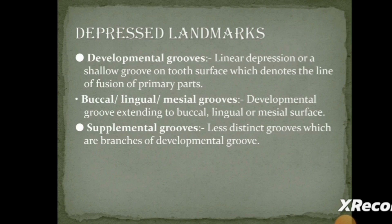Developmental grooves extend from the occlusal surface to the sides of the crown. Supplemental grooves are like tributaries to the main river — like the Ganga and its many tributaries, or a main branch with different sub-branches. So supplemental grooves are supplemental to the developmental groove, the main branch. They are not very distinct or strong, but they are visible.